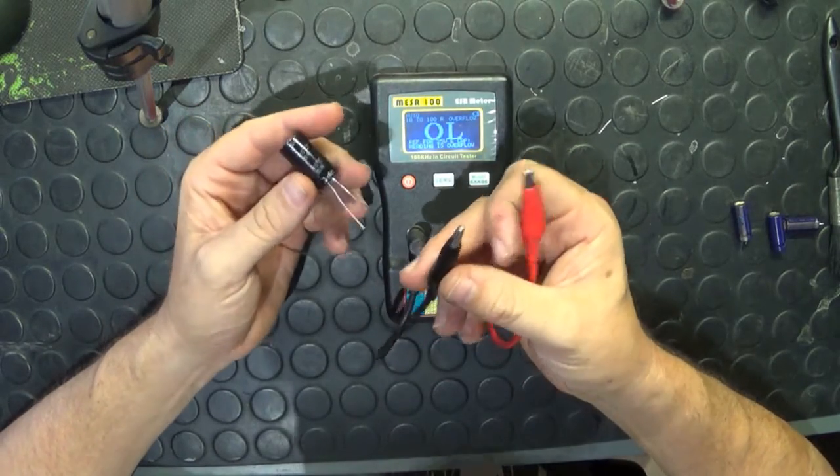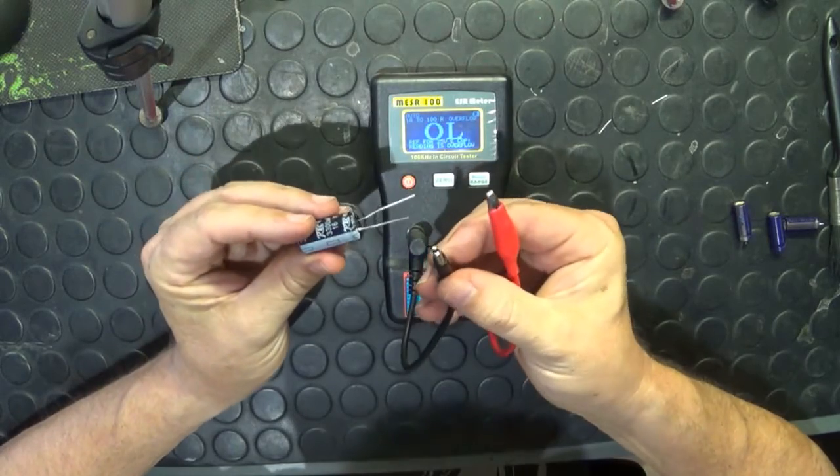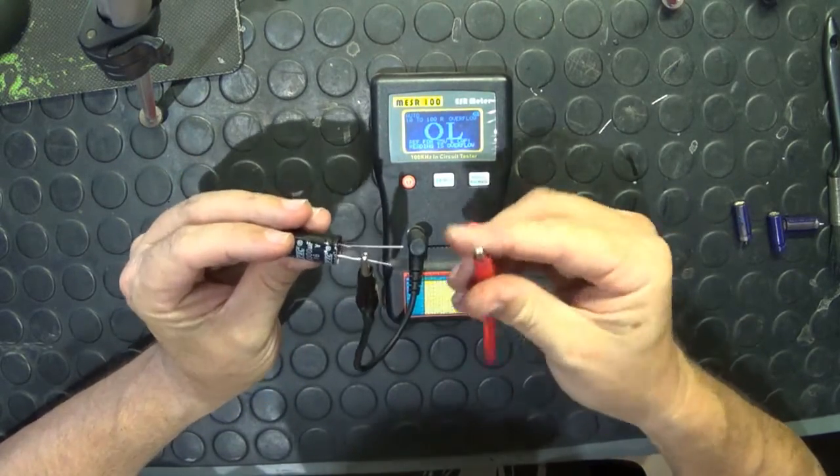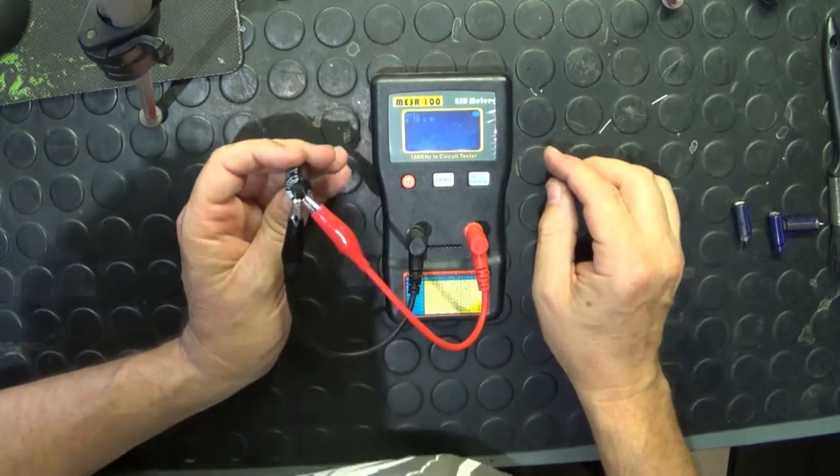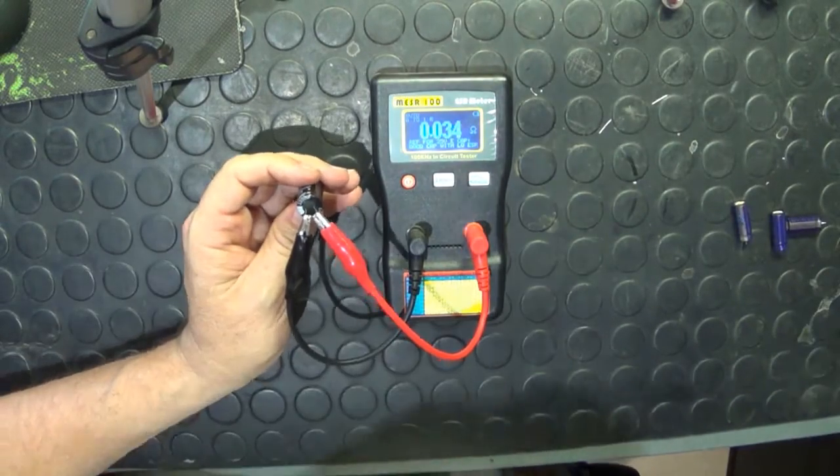Now that my ESR meter has been zeroed, I can do this in circuit as well, which is awesome. Let's take this, which I know is a good one. Attach that to the negative leg, attach the positive to the positive leg, and it will start measuring it straight away.